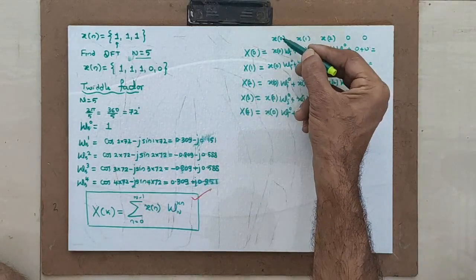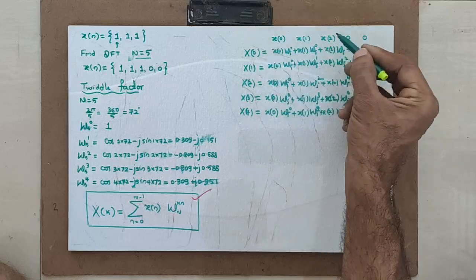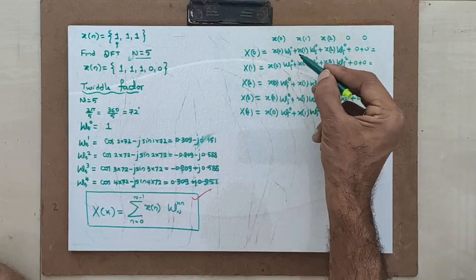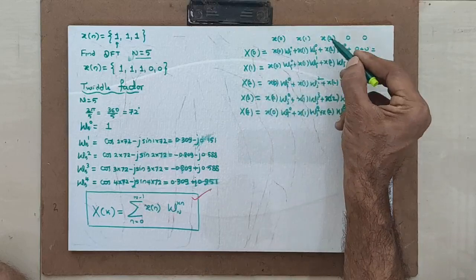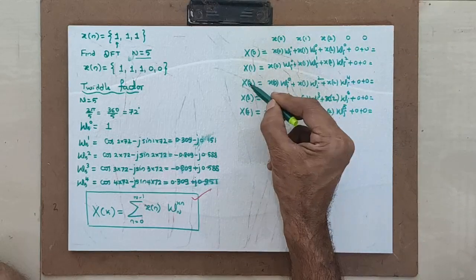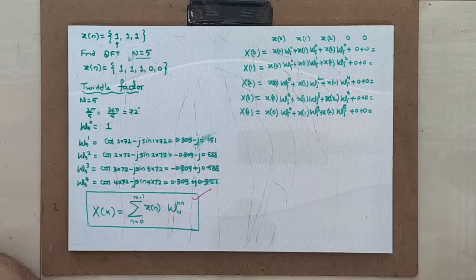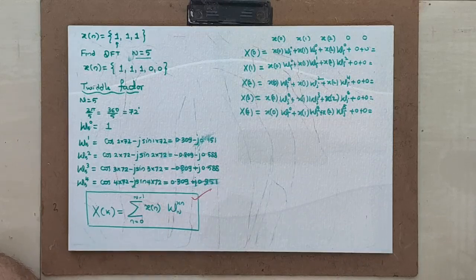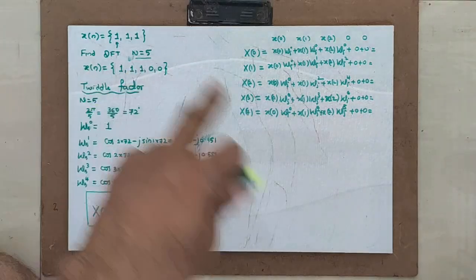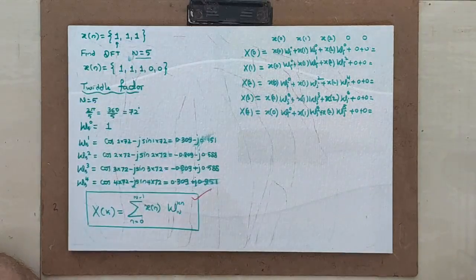The pattern is: k×n gives the twiddle exponent — 0×0=0, 1×0=0, 2×0=0 for X(0); 0×1, 1×1=W5^1, 2×1=W5^2 for X(1), and so on. Any formula you can use — it doesn't matter. Whatever you find easy, apply it. Sometimes the matrix method is easier, sometimes the direct formula is easier.